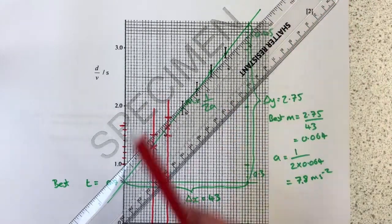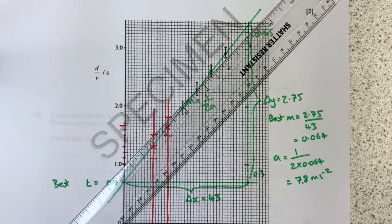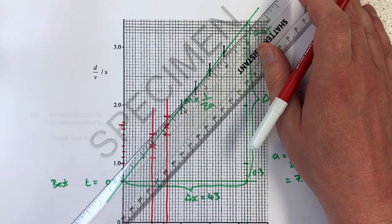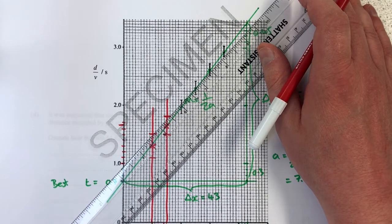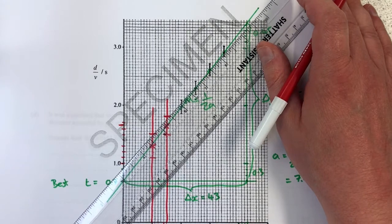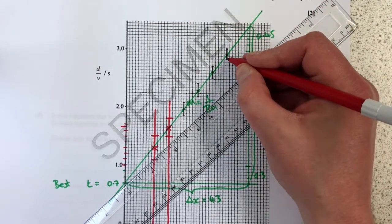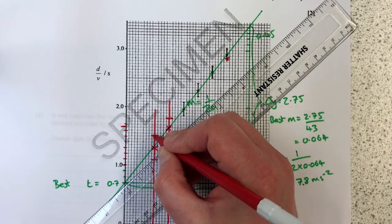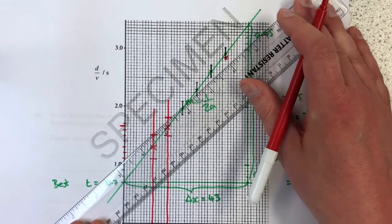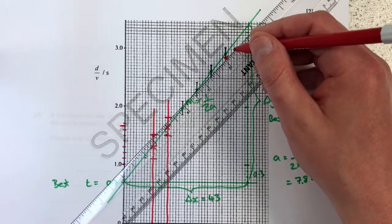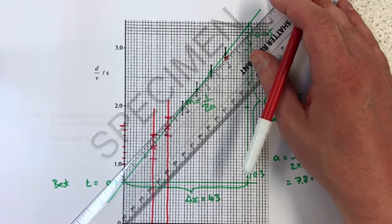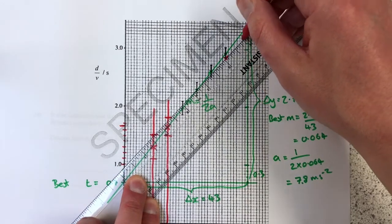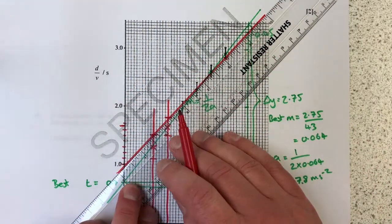Doesn't really matter which one. I'll go for the shallowest line I can get away with, which means I'm going to try and get my line—it has to run between all the error bars, but now what I'm doing is I'm literally ignoring the data points themselves and I'm just going to go from the lowest error bar here to the highest error bar over here and line up my ruler with those two points. Check that my ruler, the line that I'm about to draw, will go through between all the error bars, and it will. So now I'll just do this again but in red pen so that we can tell the difference between the good and the bad.